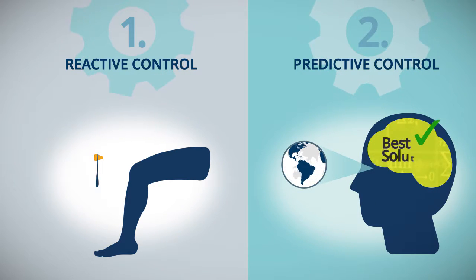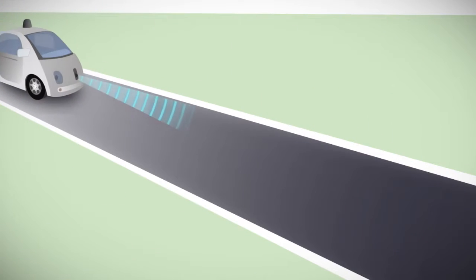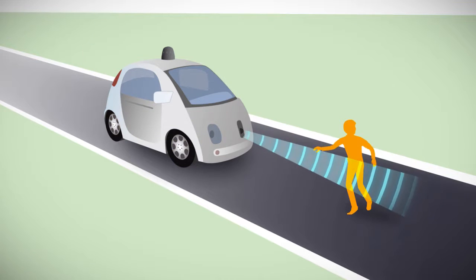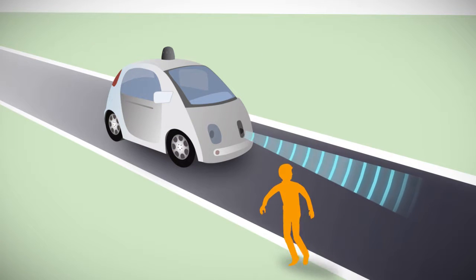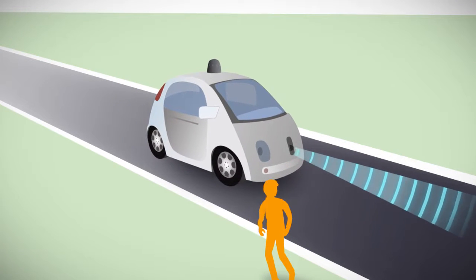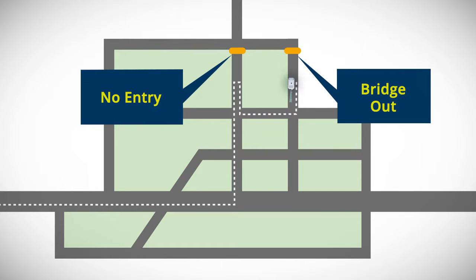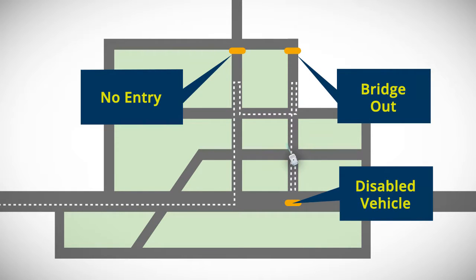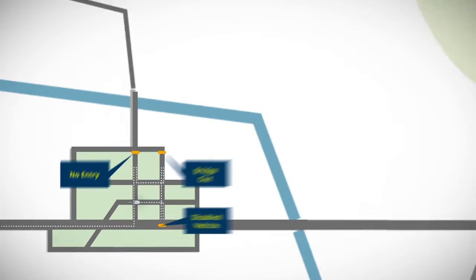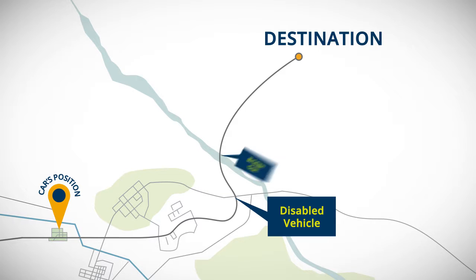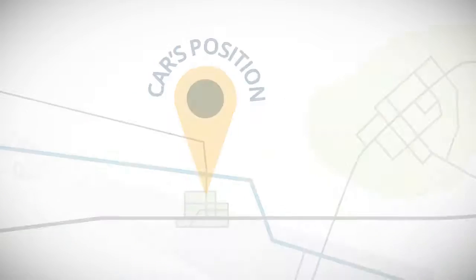Take a self-driving car. Real-time sensors react to hazardous situations to keep the car and what's around it safe. But sensors can only react to what they see around them. They don't have a plan that enables you to achieve your goal.